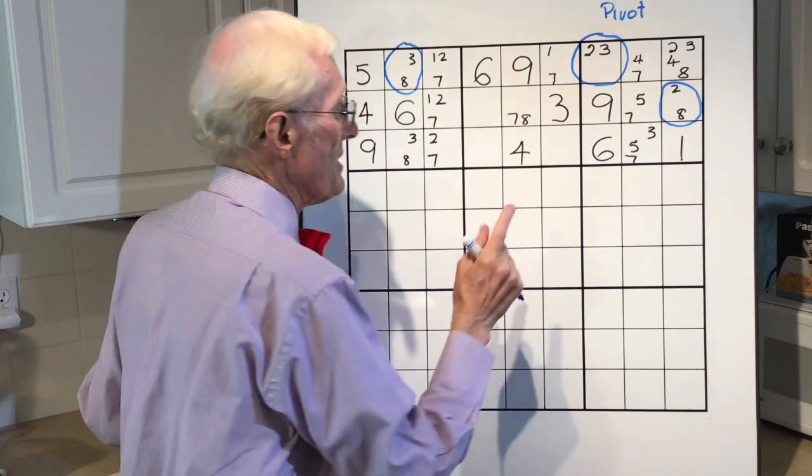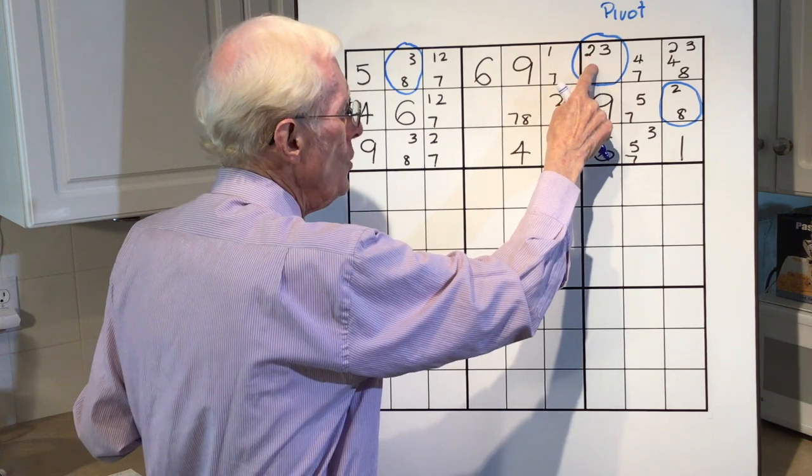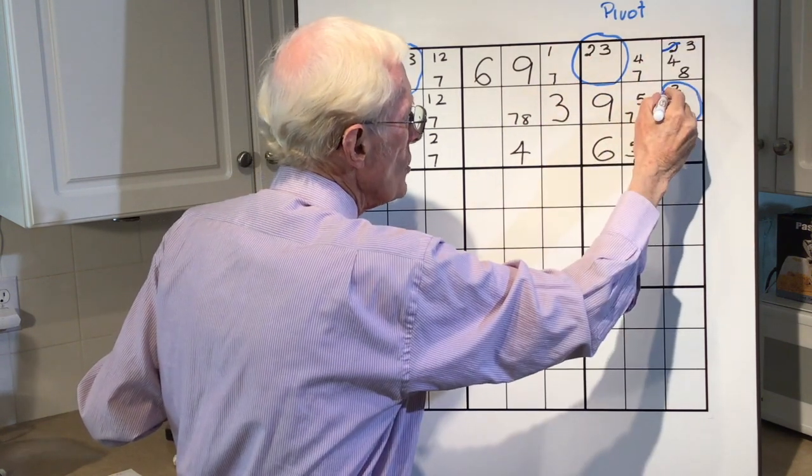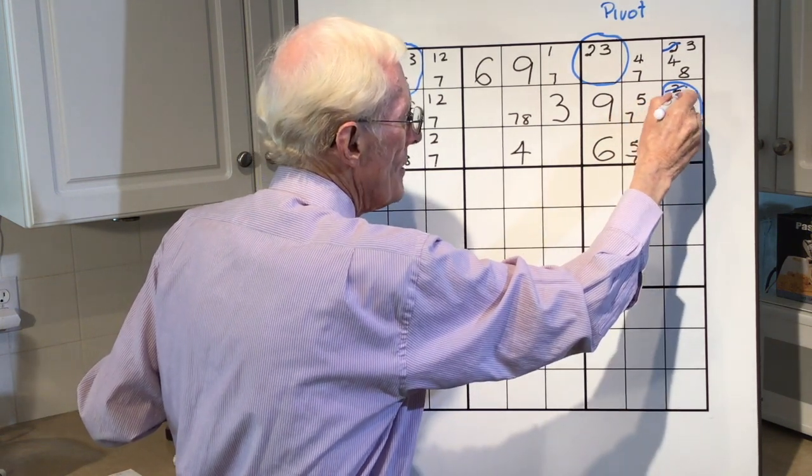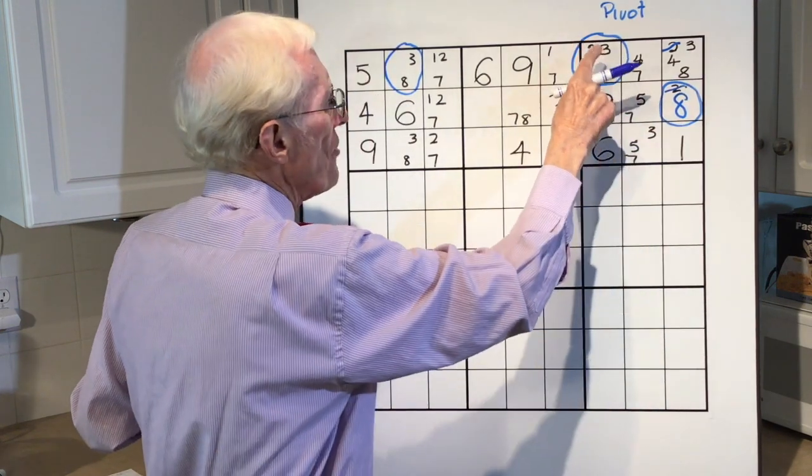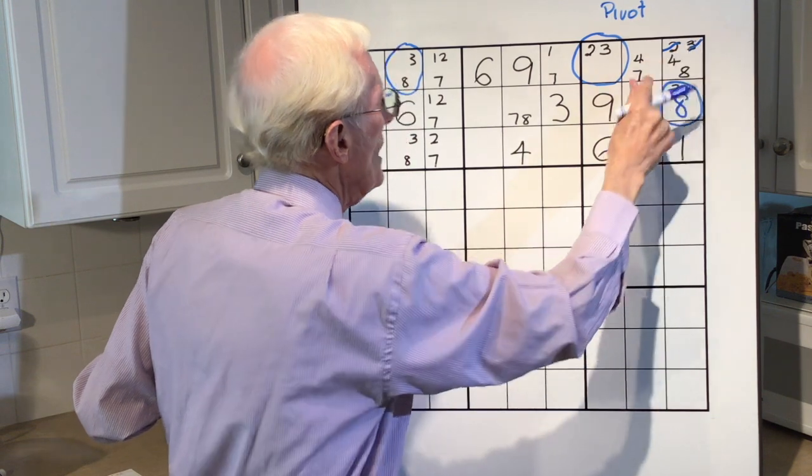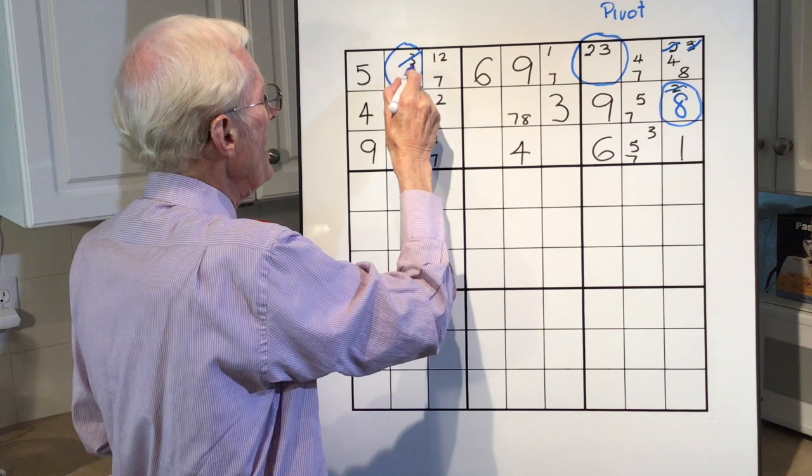Now, here we go again, the same sort of wording. If this was a 2, that 2 would go, and this 2 would go, which would make this an 8. If this was a 3, that 3 would go, and this 3 would go, we're making this an 8.